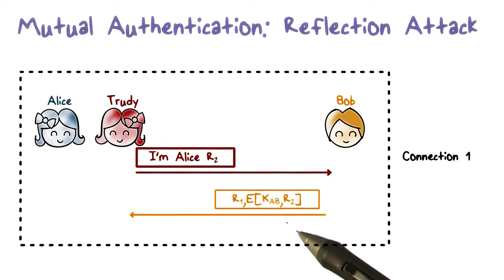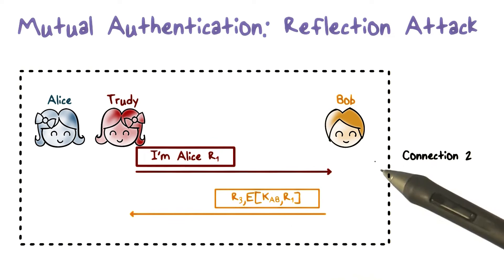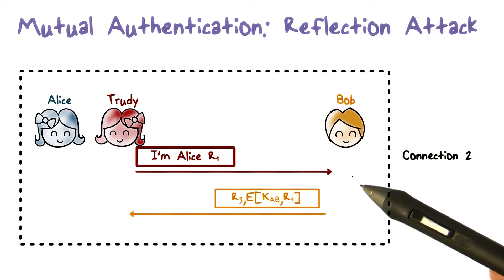Then Trudy simply opens another connection with Bob and again impersonating Alice. This time Trudy sends Bob the challenge R1 that Bob has sent her in the first connection, the one that she stuck in.